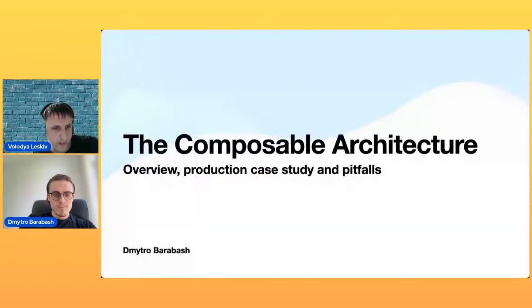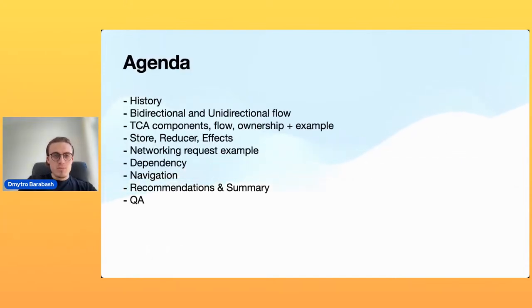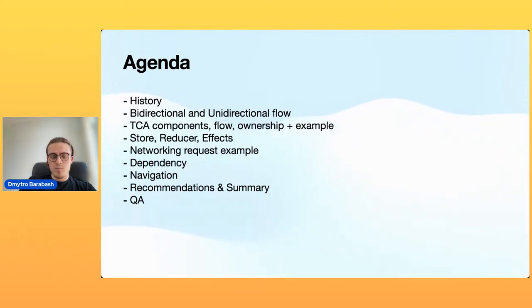Our agenda for today: history, bidirectional and unidirectional flow, TCA components, flow ownership and examples — store, reducer and effects — then network request example, dependency, navigation, recommendations, a summary, and a small Q&A session.